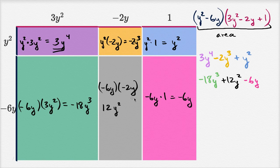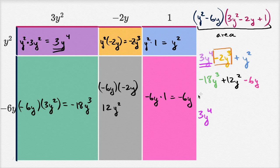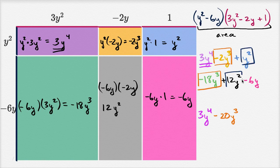This is an expression for the area of the entire thing, but we can simplify it more. We only have one fourth-degree term, so: 3y to the fourth power. For the third-degree terms, we have negative 2y to the third and negative 18y to the third — negative 2 plus negative 18 is negative 20, so negative 20y to the third. For second-degree terms, 1y squared plus 12y squared gives 13y squared. And then we still need to subtract 6y.